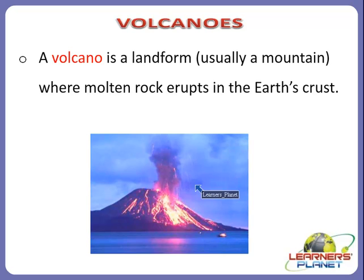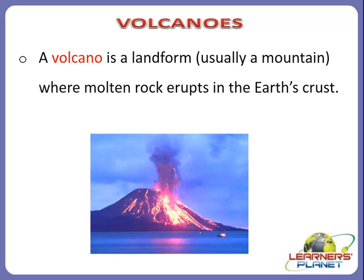Remember there is a difference between magma and lava. Magma is very hot liquid rock inside the earth. When this molten rock or magma erupts through the earth's crust, it forms a landform or mountain. In short, a volcano is a mountain that opens downwards to a pool of molten rock — magma — below the surface of the earth, and it is a hole in the earth from which molten rock and gas erupts.